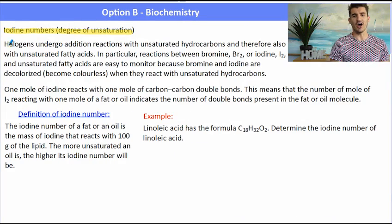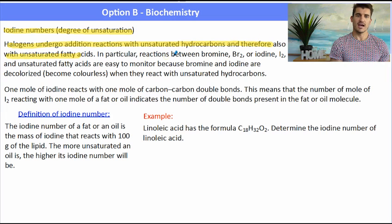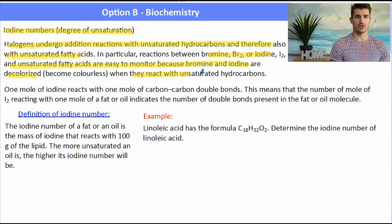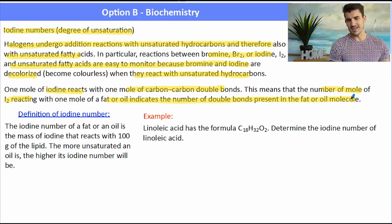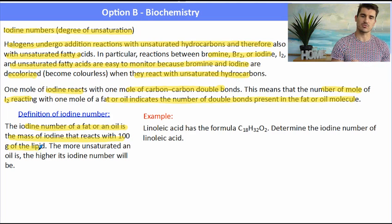So the first one, iodine numbers, which is a degree of unsaturation of a fat. Halogens can undergo addition reactions with unsaturated hydrocarbons, and therefore can undergo those reactions with unsaturated fatty acids. Bromine and iodine are widely used because they become decolorized. The main thing about this reaction is one mole of either iodine or bromine reacts with one mole of double bonds.